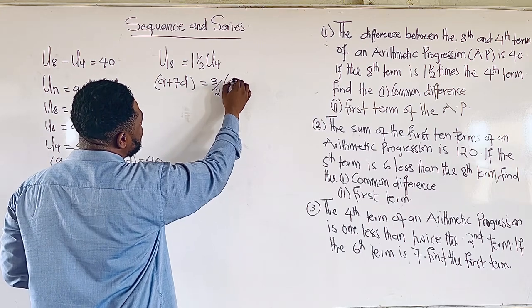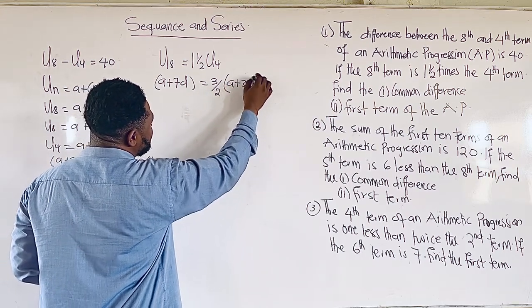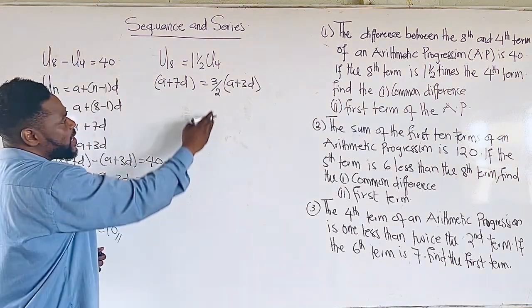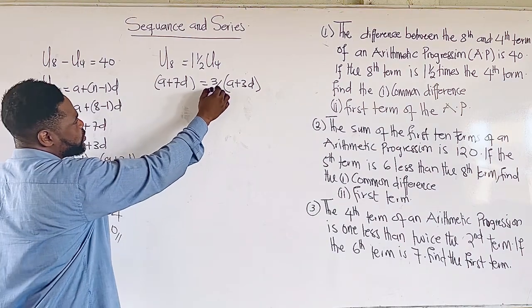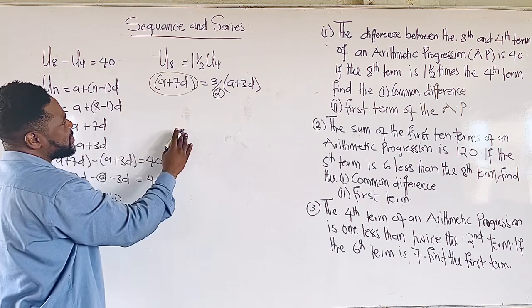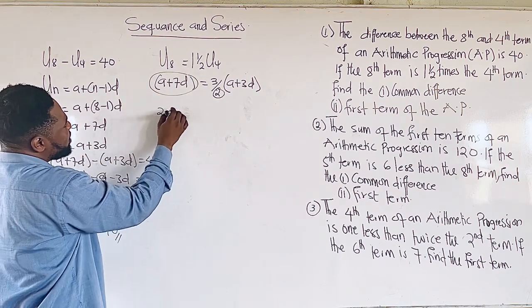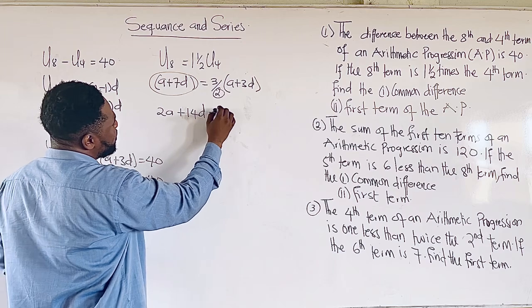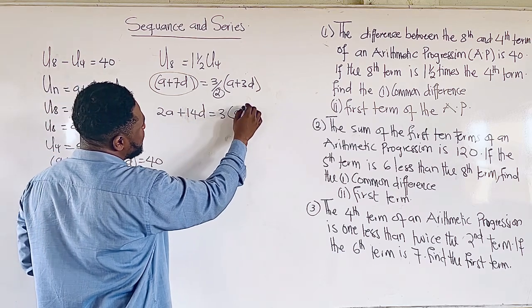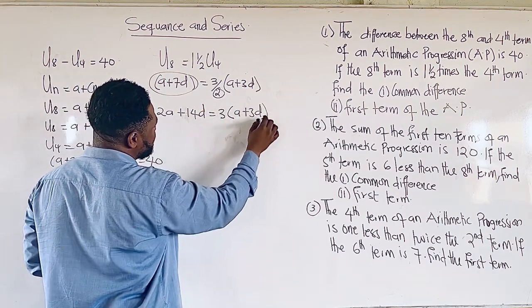Multiplying the 4th term, which will be A + 3D. Now we can find LCM or do cross multiplication. So these 2 will come and multiply this, which will give us 2A + 14D = 3(A + 3D).